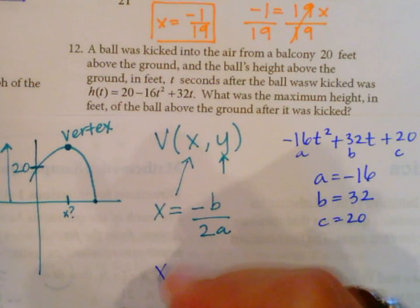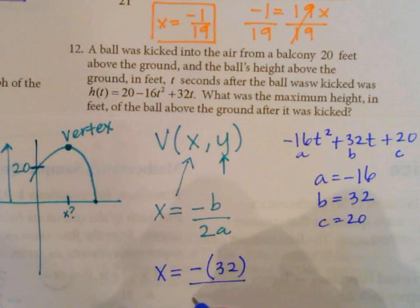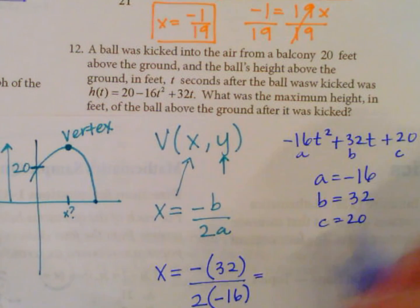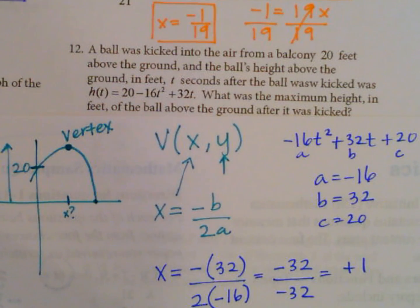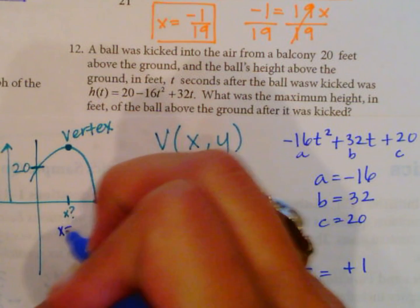To find x, we have negative b, which is negative 32, over 2 times a, which is negative 16. That's negative 32 over negative 32, which is going to equal positive 1. 32 over 32 is 1, so this happens at the x value of 1.